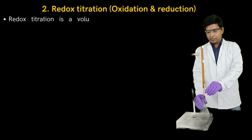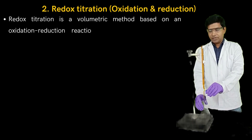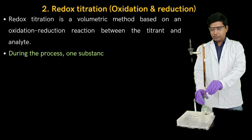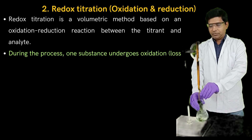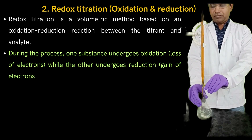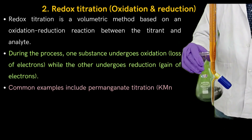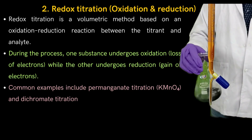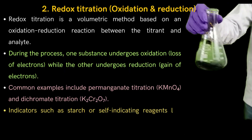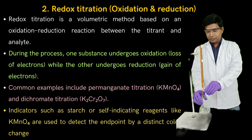Another type of titration is redox titration. Redox titration is a volumetric method based on an oxidation-reduction reaction between the titrant and analyte. During the process, one substance undergoes oxidation (loss of electrons) while the other undergoes reduction (gain of electrons). Common examples include permanganate titration (KMnO4) and dichromate titration (K2Cr2O7). Indicators such as starch or self-indicating reagents like KMnO4 are used to detect the endpoint by a distinct color change.